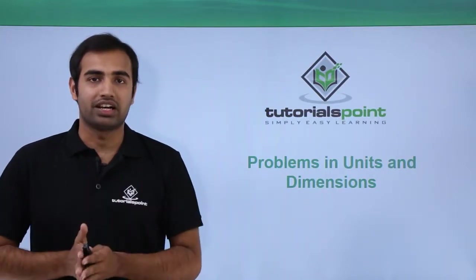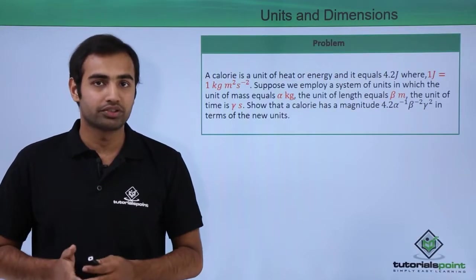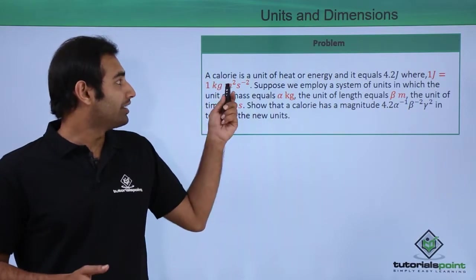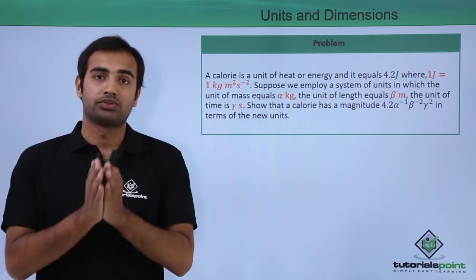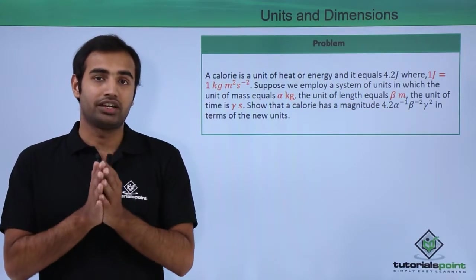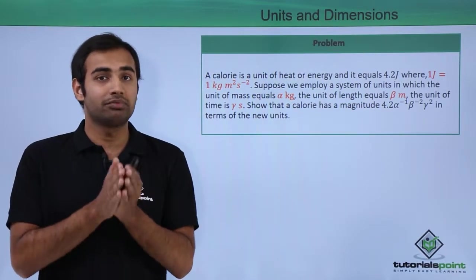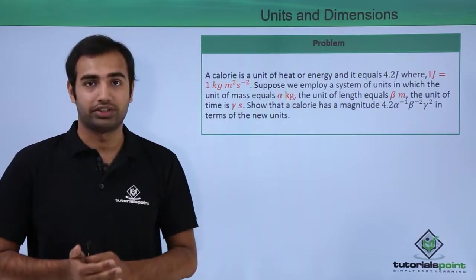Let's talk about some problems in units and dimensions today. The first question goes like this. A calorie is a unit of heat or energy and it equals 4.2 joules. So calorie is a unit of energy and joules is the SI unit of energy and the relation between calorie and joules is shown over here.